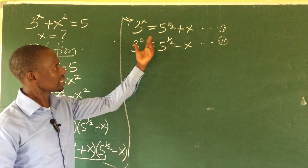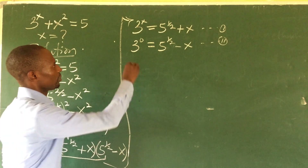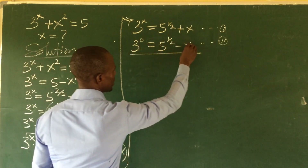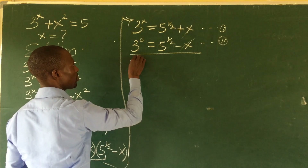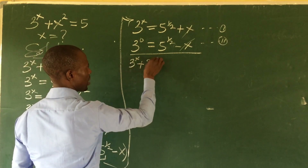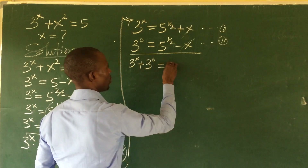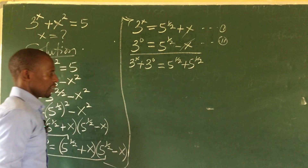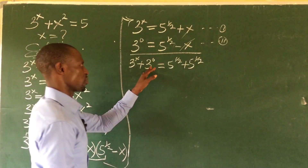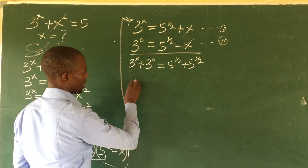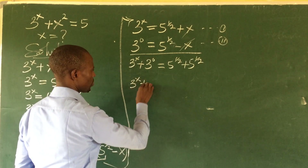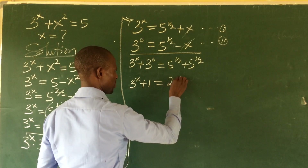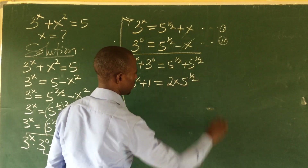Taking this as a system of simultaneous equations, we add equations 1 and 2 together. Adding them, we get 3^x + 3^0 = 2 · 5^(1/2). Since 3^0 = 1, this simplifies to 3^x + 1 = 2 · 5^(1/2).